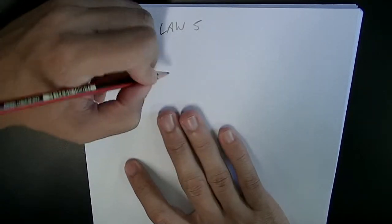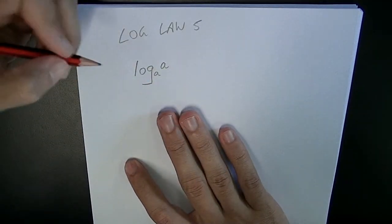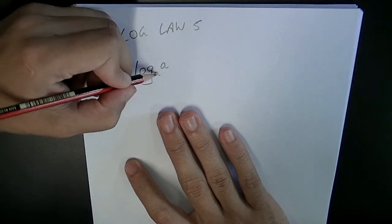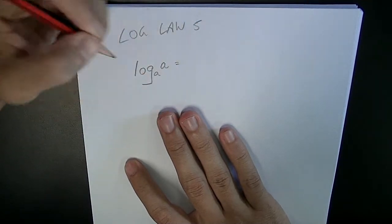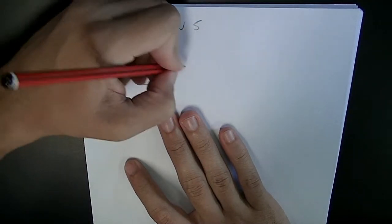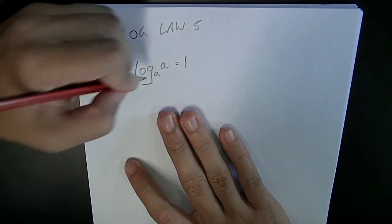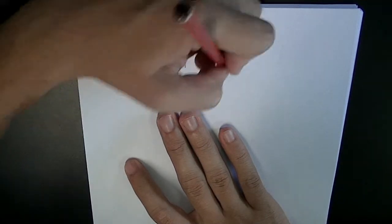Log base a of a. So where the base is the same as this, is always equal to 1. As long as they're the same, that's always going to be equal to 1.